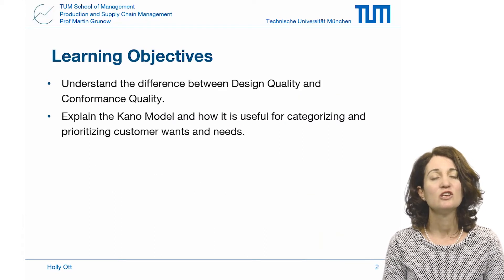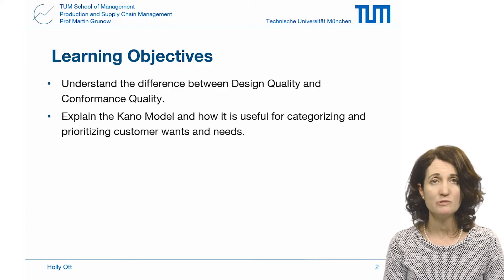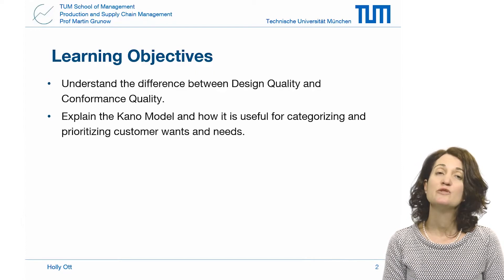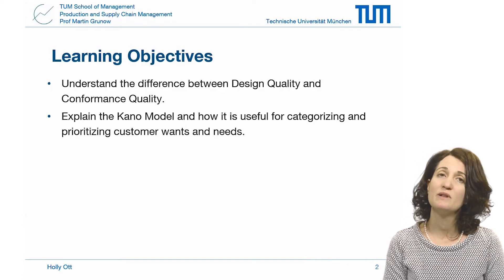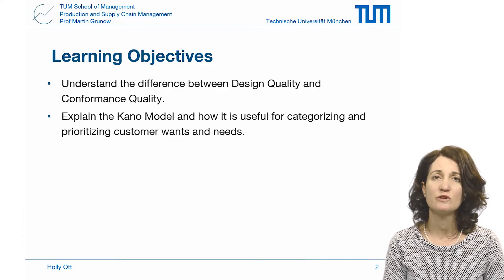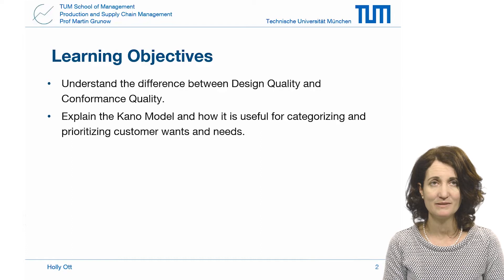The learning objectives for this session are to understand the difference between design quality and conformance quality, and to be able to explain the Kano model and how it is useful for categorizing and prioritizing customers' wants and needs.